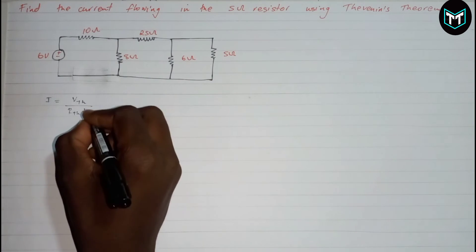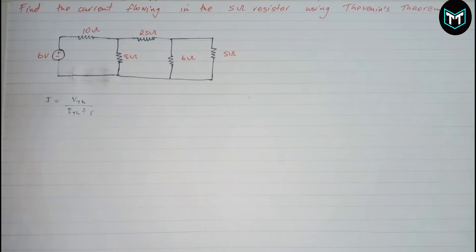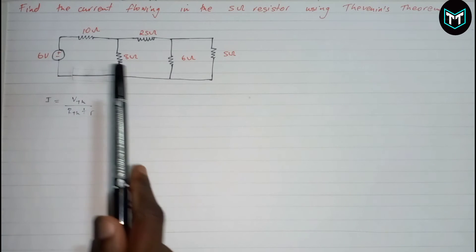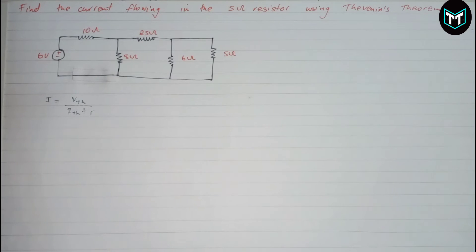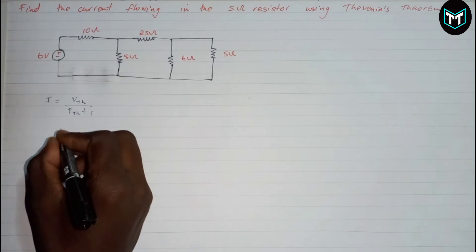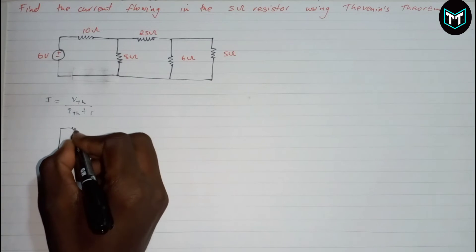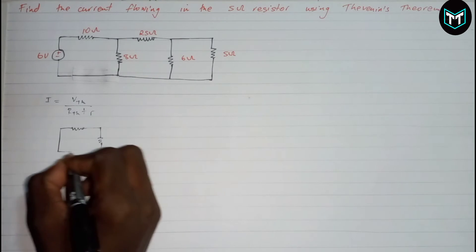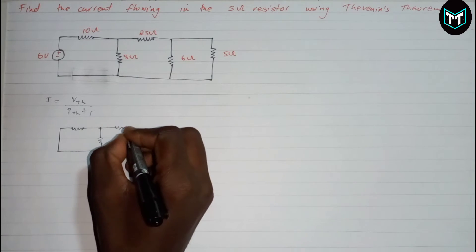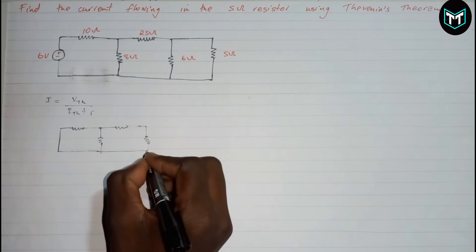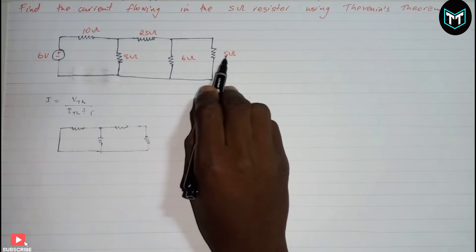So now what we're going to do first of all: I'm going to replace the voltage source with a short circuit, and the current source is going to be replaced with an open circuit. So we're going to have a short circuit here, and we have a resistor, an 8 ohm resistor, a 25 ohm resistor, and a 6 ohm resistor.